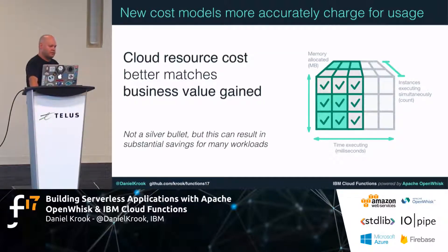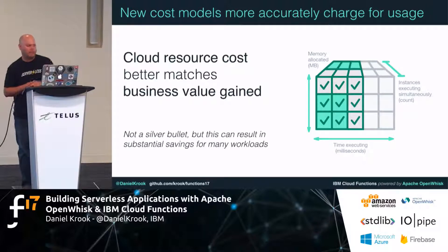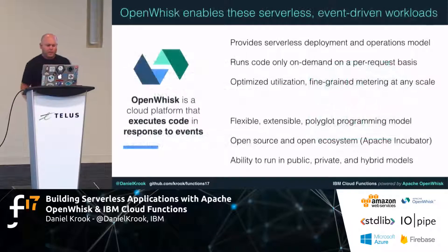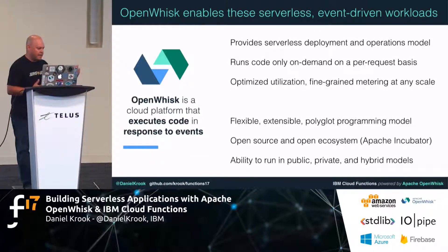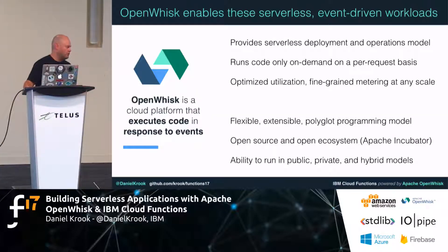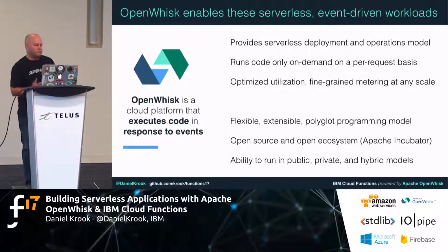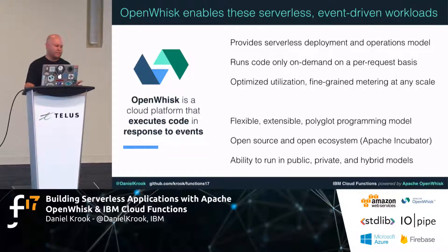Of course, serverless is not a silver bullet. There are great use cases, but many anti-patterns to worry about as well — we'll see how those hash out in the coming months and years. IBM started working on Apache OpenWhisk about 20 months ago, and it's been in production on our cloud called OpenWhisk on IBM Bluemix since last December, now rebranded as Cloud Functions.